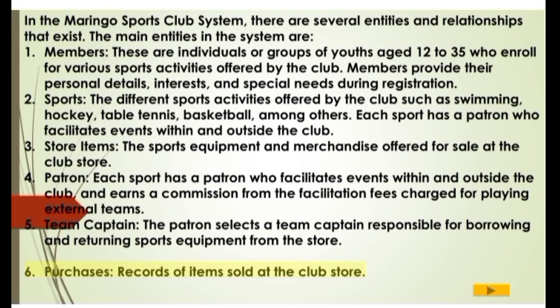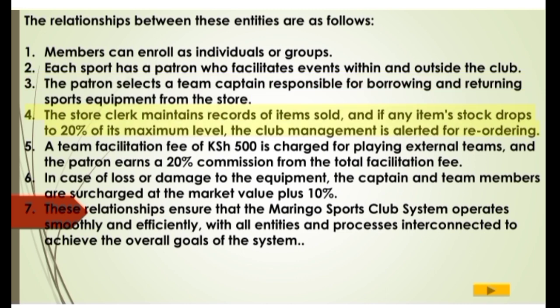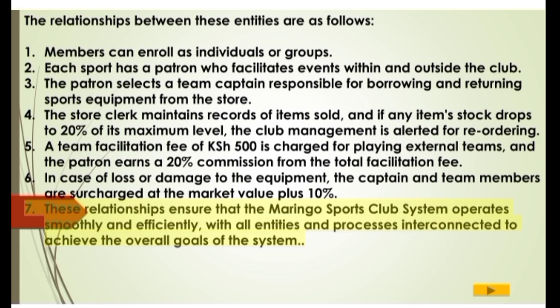The relationships between these entities are as follows: 1. Members can enroll as individuals or groups. 2. Each sport has a patron who facilitates events within and outside the club. 3. The patron selects a team captain responsible for borrowing and returning sports equipment from the store. 4. The store clerk maintains records of items sold, and if any item stock drops to 20% of its maximum level, club management is alerted for reordering. 5. A team facilitation fee of KSH500 is charged for playing external teams, and the patron earns a 20% commission from the total facilitation fee. 6. In case of loss or damage to the equipment, the captain and team members are surcharged at the market value plus 10%. These relationships ensure that the Maringo Sports Club system operates smoothly and efficiently, with all entities and processes interconnected to achieve the overall goals of the system.